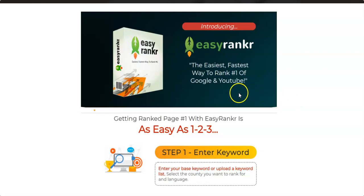EasyRanker is a web-based software, which means you don't need to download anything on your computer — you can simply log in and start using it. EasyRanker is a software that will find keywords for you, for your YouTube videos. It will find all the keywords that have zero or very low competition so that you can easily rank on YouTube as well as on Google. It's the fastest, easiest way to rank number one on Google and YouTube.